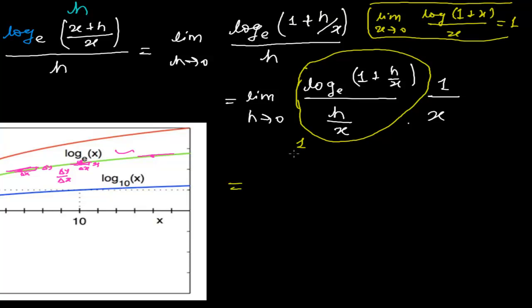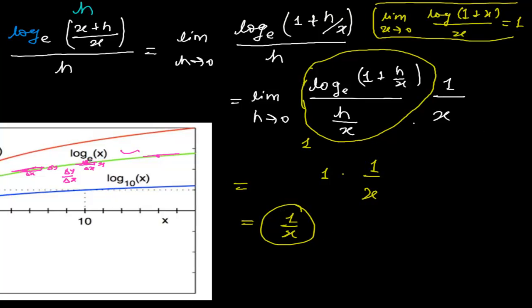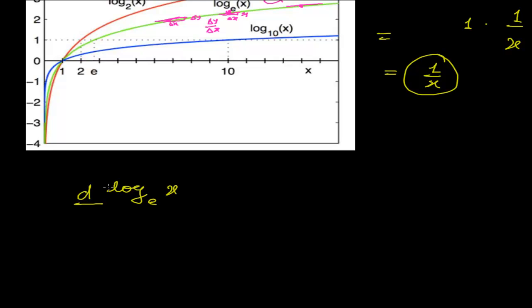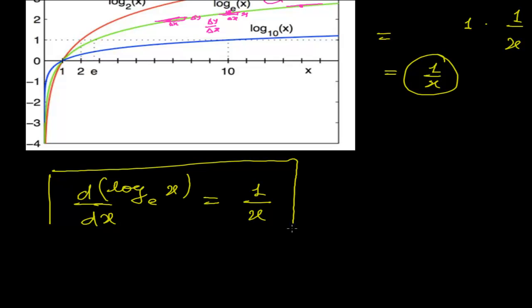So it simplifies to 1 times 1 upon x, which gives us 1 upon x as our answer. The conclusion is that the derivative of log x to the base e with respect to x is equal to 1 upon x. We get a very good standard formula. We will be using this as a standard formula and solving a lot of problems related to logarithms.